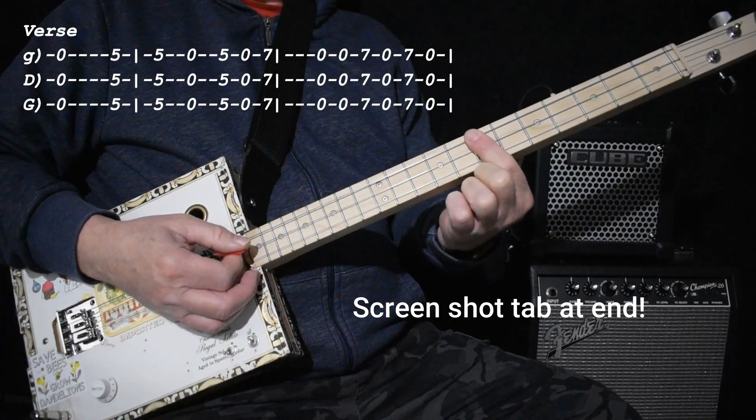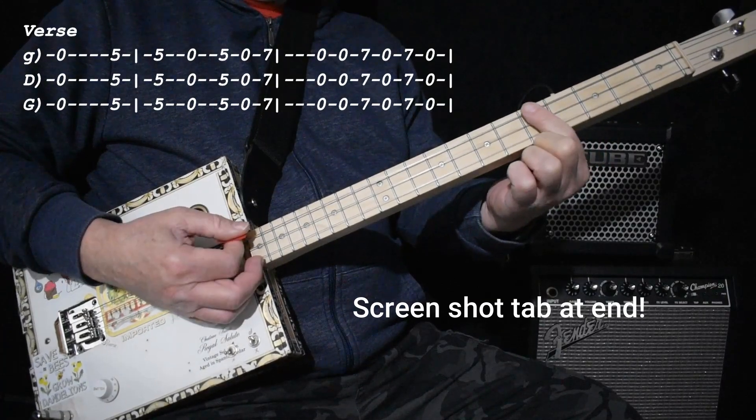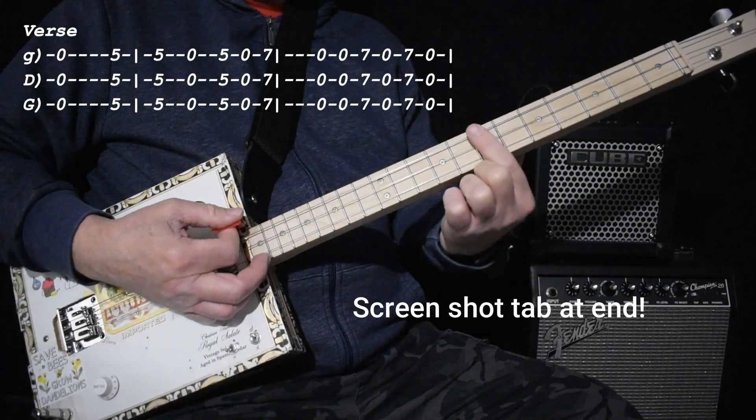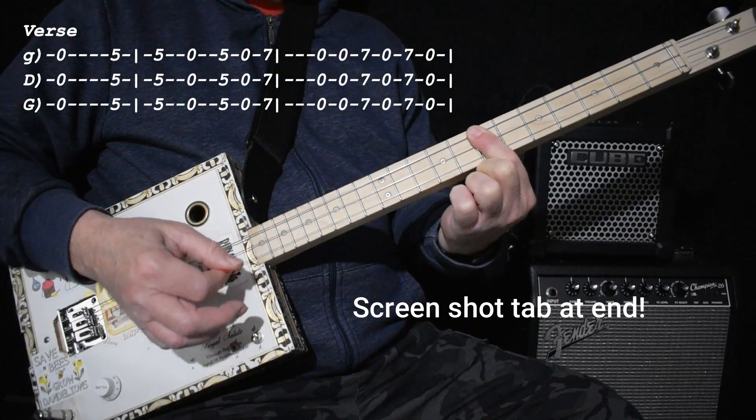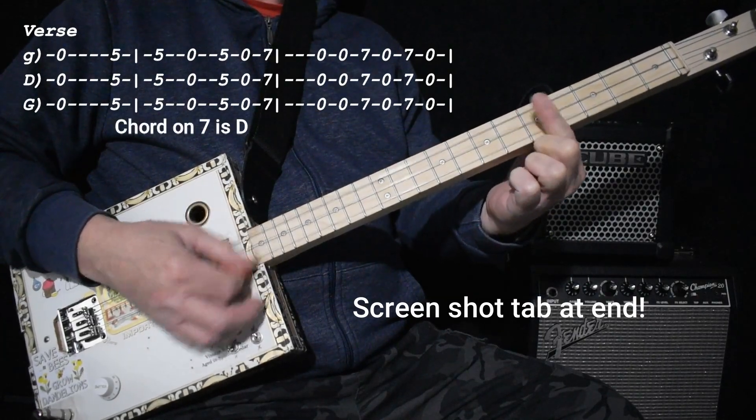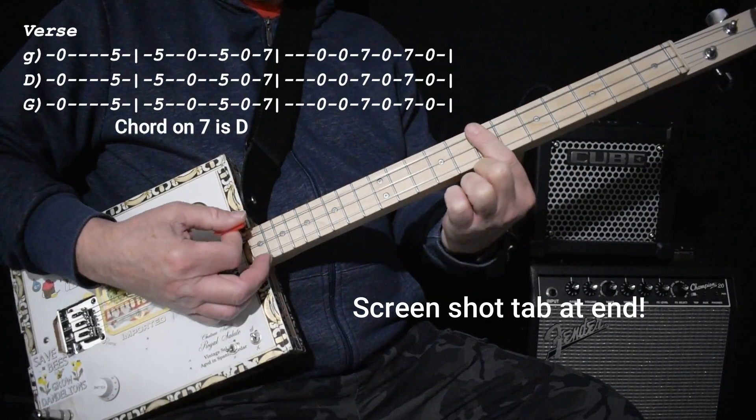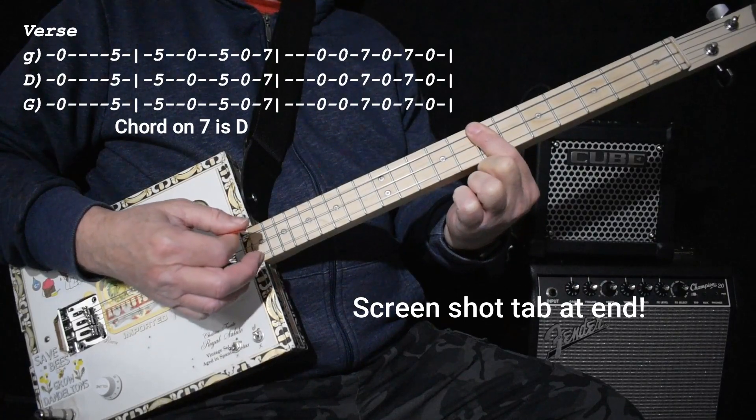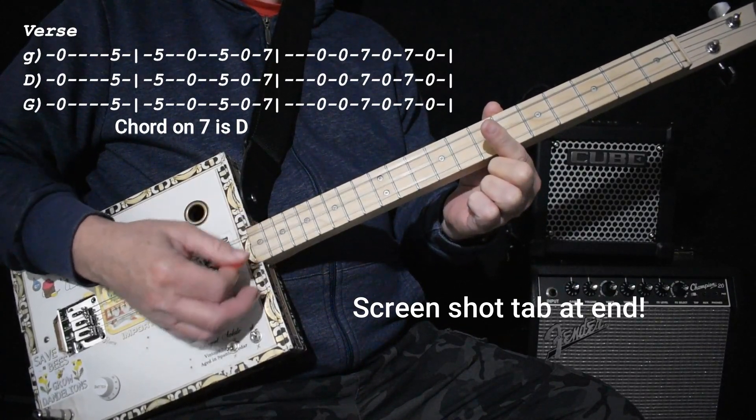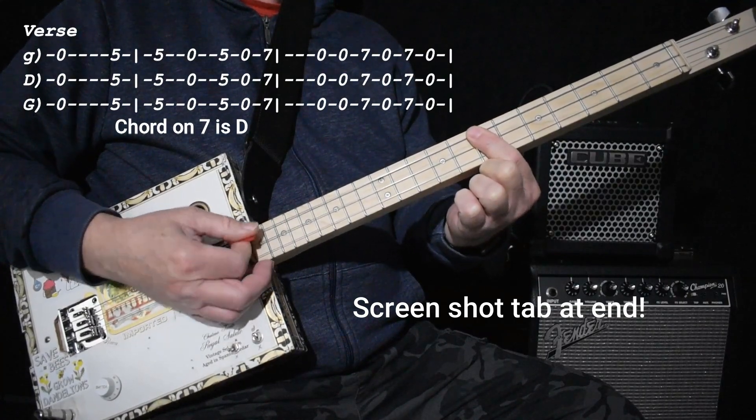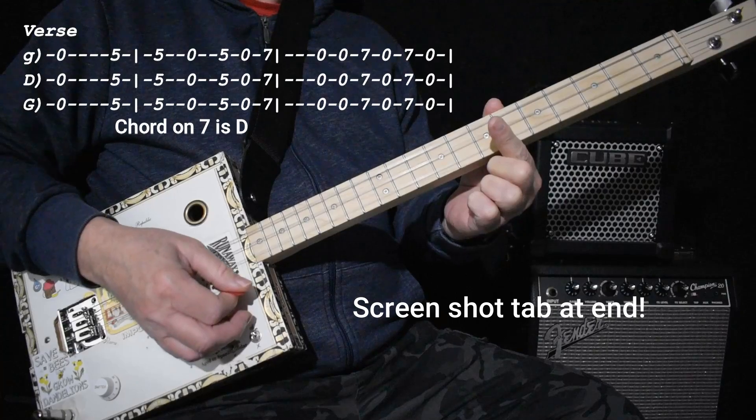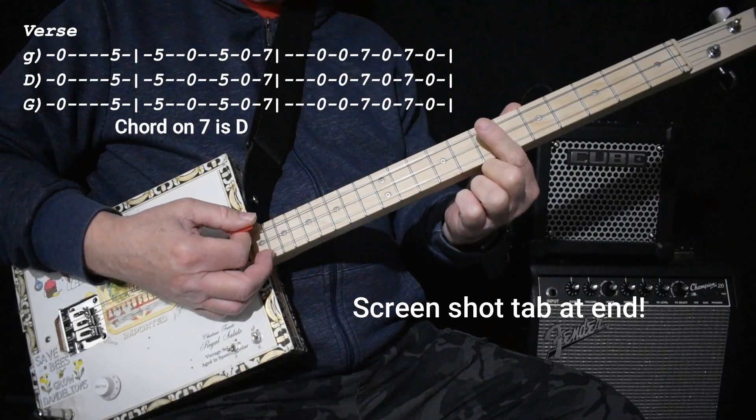So I'll do that slow. [plays slowly] One more time, slow. [plays slowly] And once you're there, you go back to the open G twice, seven, open again, seven, open.